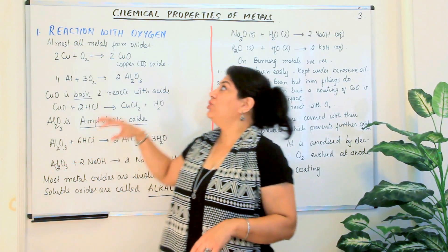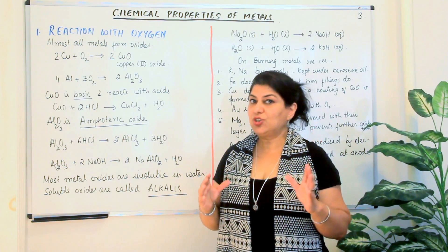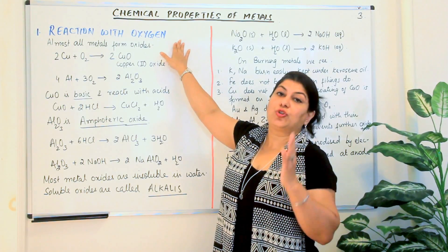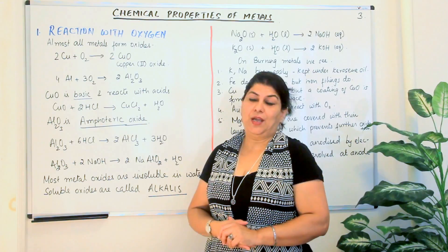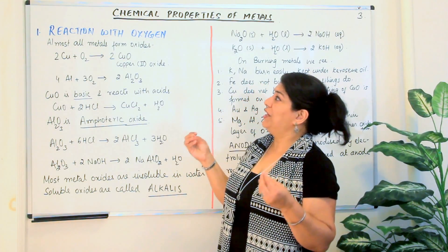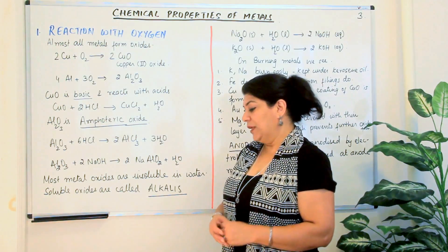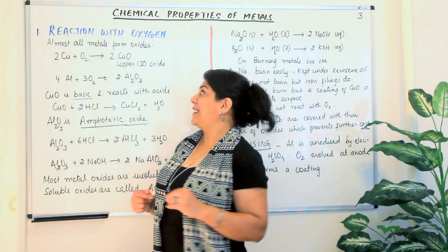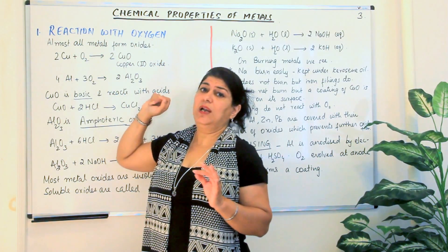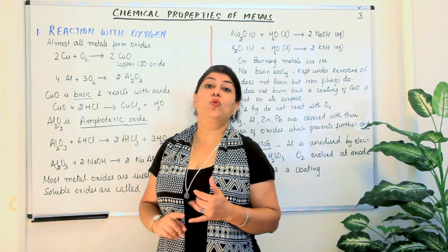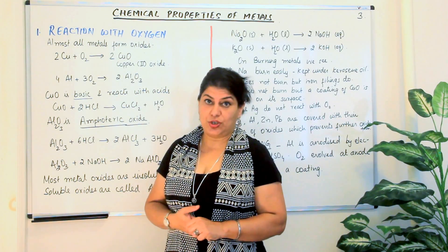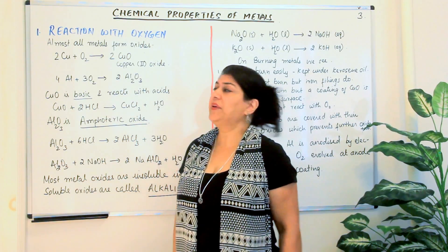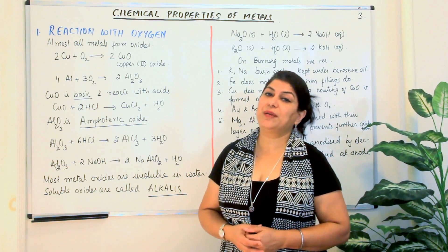The topic of this video is going to be chemical properties of metals and nonmetals, and we are only going to study one property: the reaction of metals with oxygen, or the oxidation of metals. Almost all metals react with oxygen to form their oxides. We say almost all because there are noble metals like gold and silver which do not react with oxygen. But normally, almost all metals react with oxygen and result in the formation of their metallic oxides.